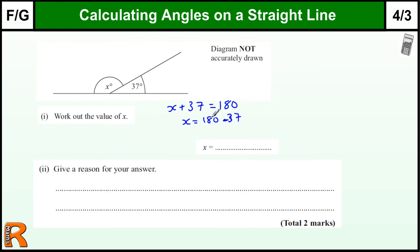Okay, so if I just do 180 take away 37. 80 take away 40 is 140, and I need to add three back because I took away 40 instead of 37, so it's 143.